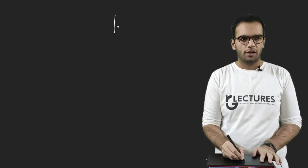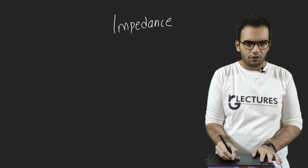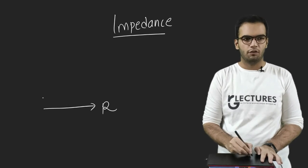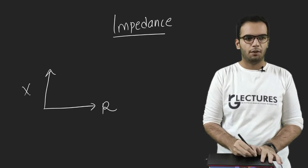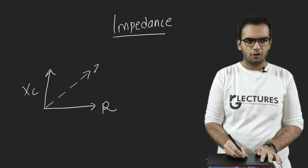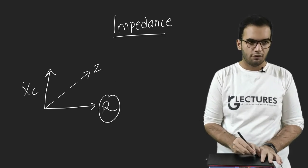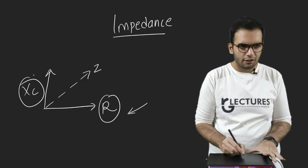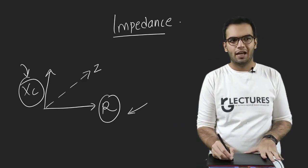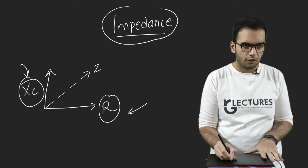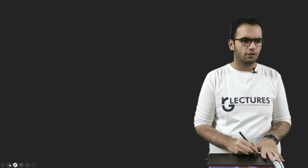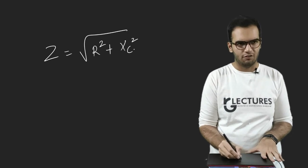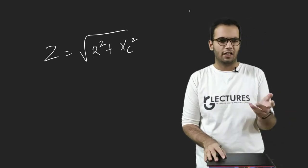So now let's talk about the impedance. Impedance is nothing but just a resultant vector of both. Suppose this is my resistance. This is my reactance. So impedance is just a resultant vector of both resistance as well as reactance. So since it contains both the elements, non-reactive as well as reactive, so we have named it as a different term which is impedance. So impedance is nothing but just a resultant of resistance as well as reactance. It can be XC, it can be XL, it can be anything.